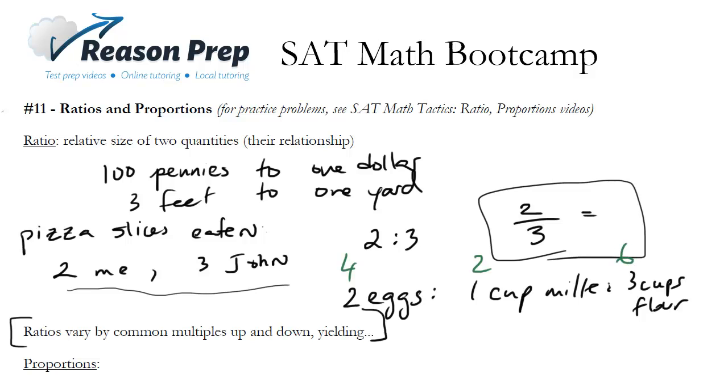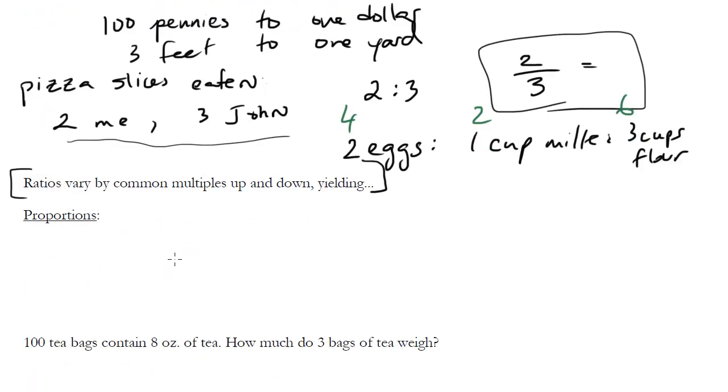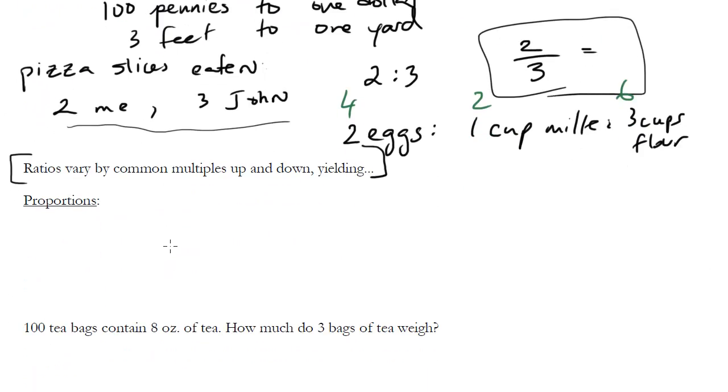This leads us to proportions. Proportions are just the varying of ratios of different ingredients, different quantities, varying by constant multiples. That's all proportion really is.